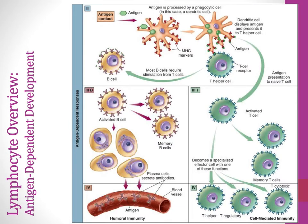Then we have the antigen-dependent response, where cells are presented with antigen. The antigen-presenting cell — which looks like an octopus with all its dendrites — has MHC receptors on its surface that can hold antigen. It takes up a pathogen, breaks it down into small pieces, and loads antigen onto the MHC. On the right of the figure you can see antigen present on those receptors, which it can then present to a T cell. If the T cell doesn't see the antigen, nothing happens. If it does, it becomes activated.